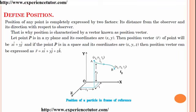Define position. The position of any point is completely expressed by two factors: its distance from the observer and its direction with respect to the observer. That is why position is characterized by a vector known as the position vector.